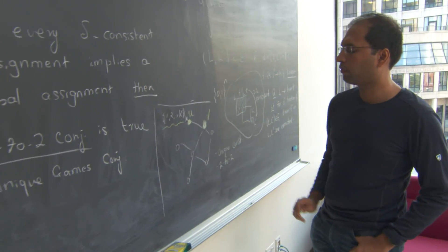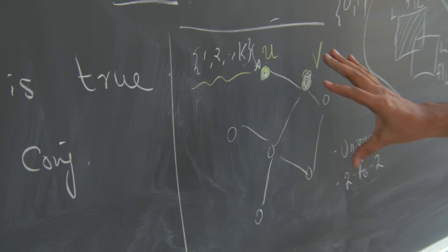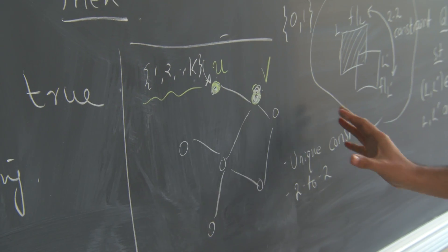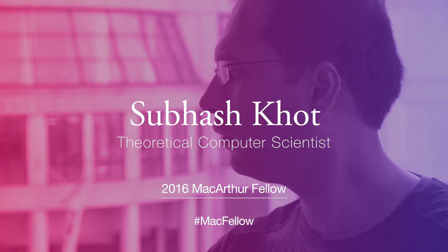My research area is the study of power and limitations of computing. In short, it's a study of what computers can do and what computers cannot do. I'm Subhash Khoth. I'm a theoretical computer scientist.